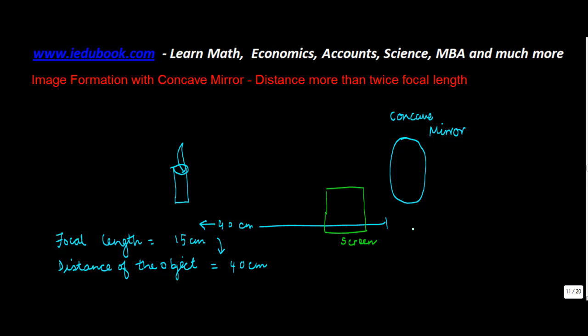Let us take the second case of image formation in case of concave mirror. In this case, we are assuming that the distance of the object, namely the candle, is more than twice the focal length.